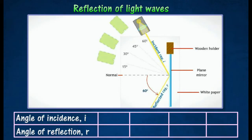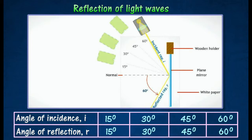The angle of incidence I and the angle of reflection R are measured and recorded. The experimental results show that the angle of incidence equals the angle of reflection. Hence, reflection of light waves obeys the law of reflection.